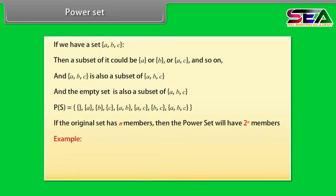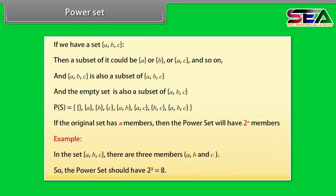Example. In the set A, B, C, there are three members: A, B and C. So the power set should have 2 raised to power 3 equals 8, which it does.